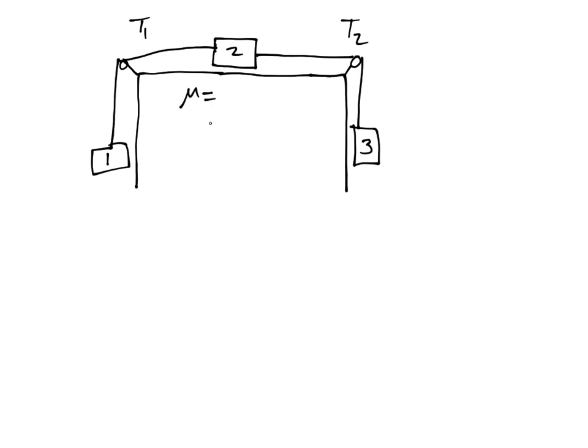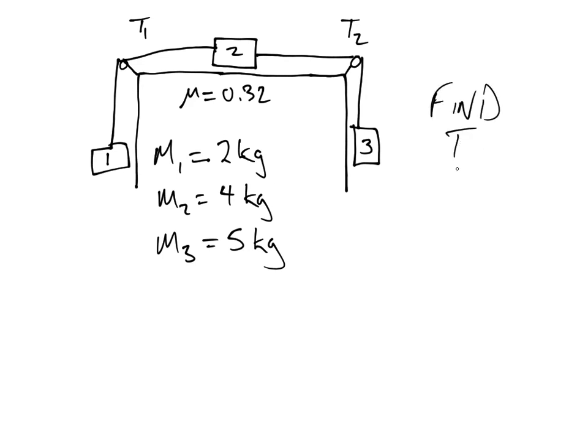Let's write down what we're given. Coefficient of friction is going to be 0.32. M1 is going to equal 2 kilograms, M2 is going to equal 4 kilograms, and M3 is going to equal 5 kilograms. And what we're supposed to do here is we're supposed to find T1 and T2.